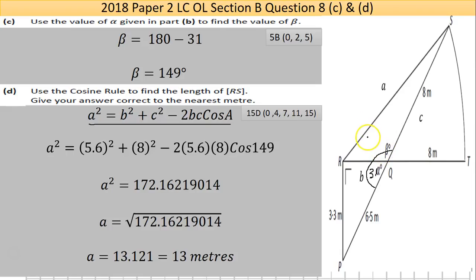5.6 is one side, 8 is the other, so minus 2 times B times C is minus 2 times 5.6 times 8 times cos 149 which is the angle here. I can put that straight to the calculator.